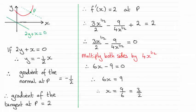Hi. Now for this question we had to work out the x-coordinate for point P on the curve where the normal was parallel to the line 2y plus x equals 0. And it turns out that that x-coordinate is 3 over 2 or 1 and a half.